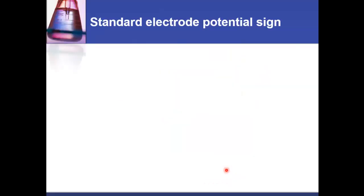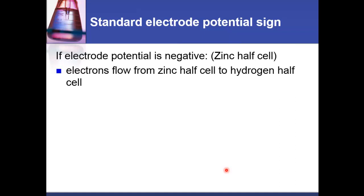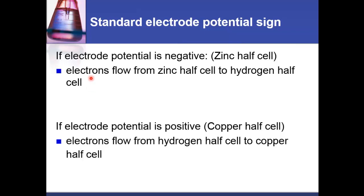Why is the sign important? If the electrode potential is negative, as with the zinc half cell, the electrons flow from the zinc half cell to the hydrogen half cell. On the other hand, if the electrode potential is positive — which is the case for a copper half cell — the electrons flow from the hydrogen half cell to the copper half cell.